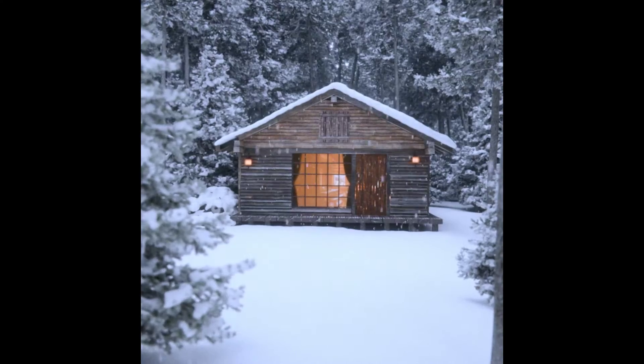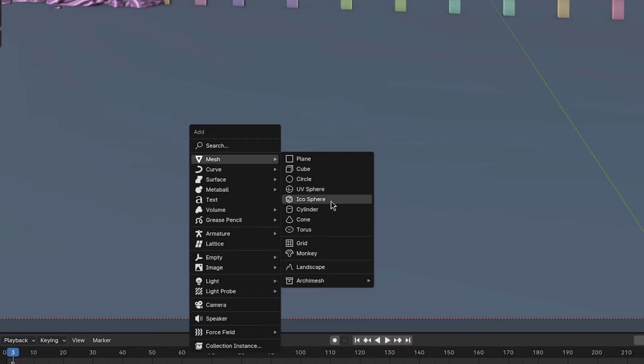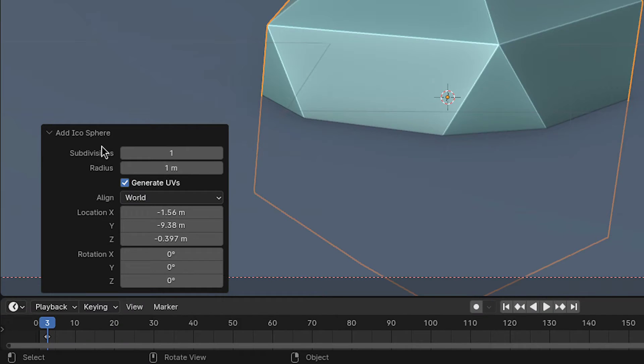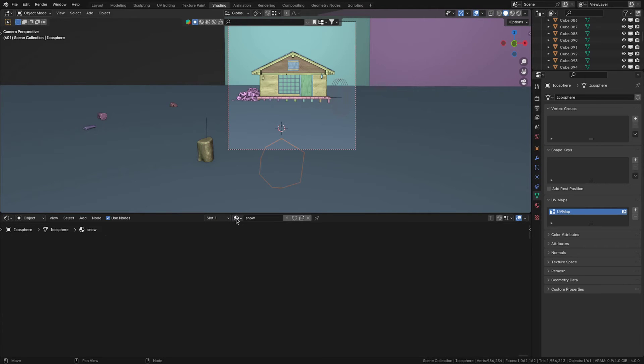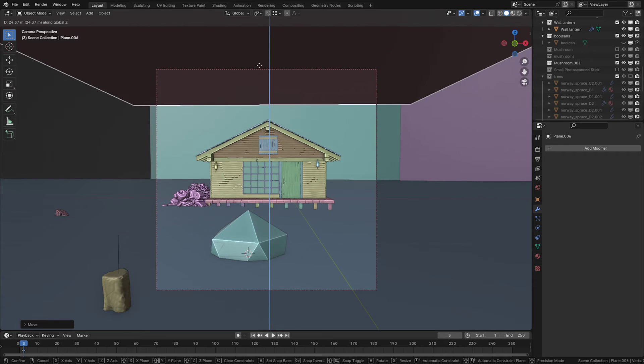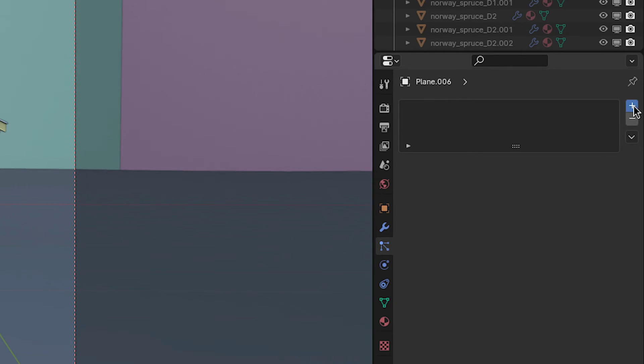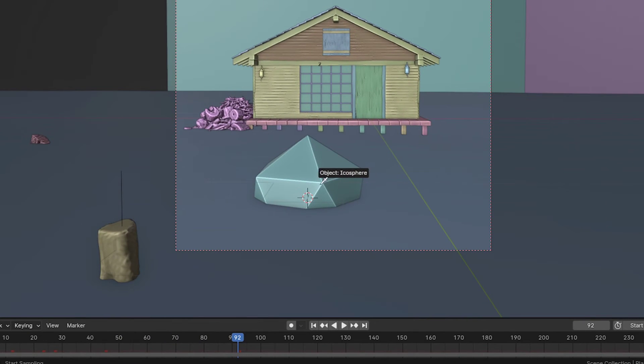So now we can move on to the falling snow. To make the actual snowflake, just add an icosphere, reduce the subdivisions and give it the snow material we created earlier. Then to make it fall from the sky, add a plane and move it high up so it's not visible to the camera. Then add a particle system and increase the particle amount. Afterwards, give them a long lifetime and select the icosphere as the instance object.